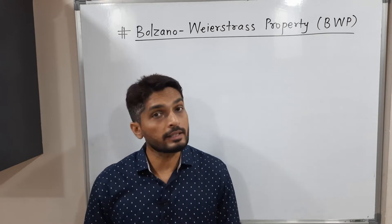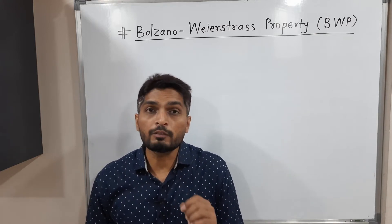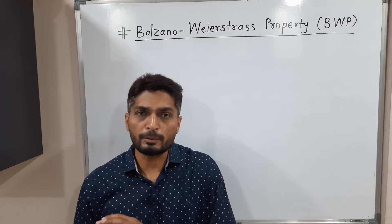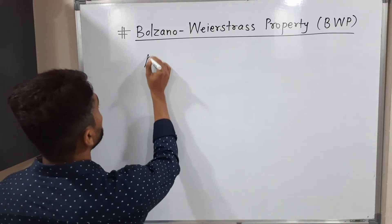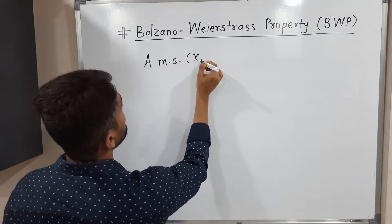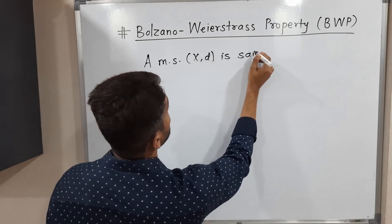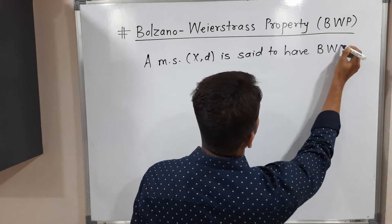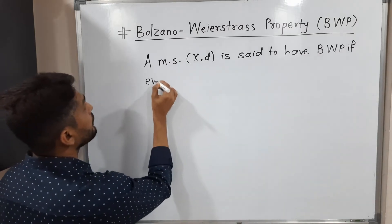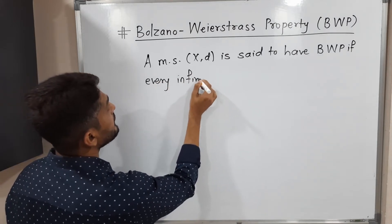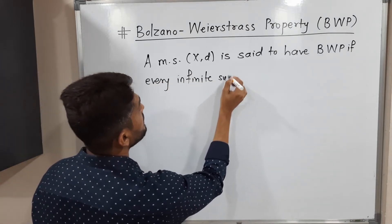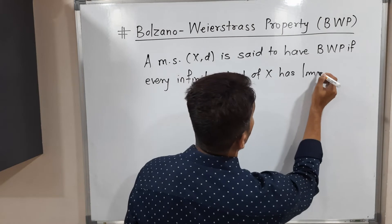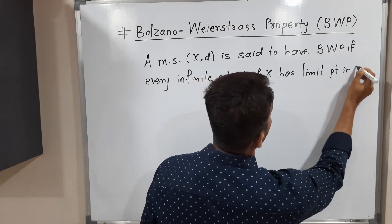A metric space (X, d) is said to have BWP if every infinite subset A of X has a limit point in X.